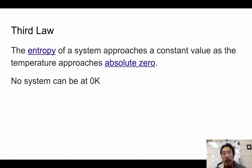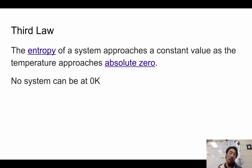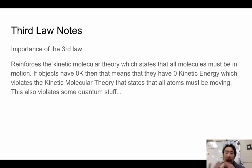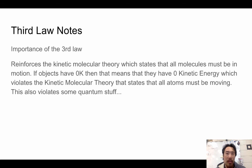The third law: the entropy of a system approaches a constant value as the temperature approaches absolute zero. The important part is that no system can actually reach zero Kelvin. If you were to reach zero Kelvin, you'd have no energy, which violates the kinetic molecular theory — all objects must be moving on an atomic level. It also breaks quantum mechanics: if you could locate and stop an atom, you can't know how fast it's going — but how can it be moving if it's not moving? You can never reach zero Kelvin.